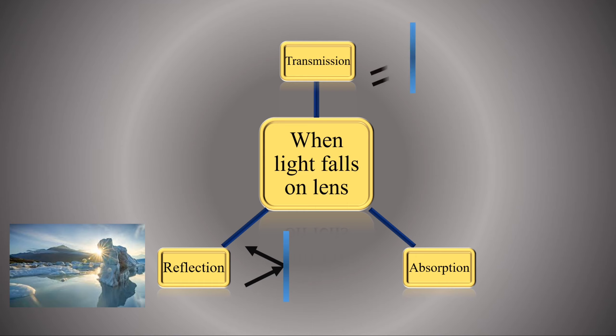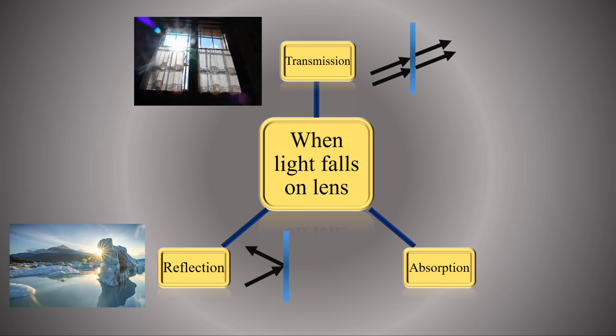Transmission is when material lets waves pass through the substance. An example could include a window transmitting light which makes your house brighter inside.